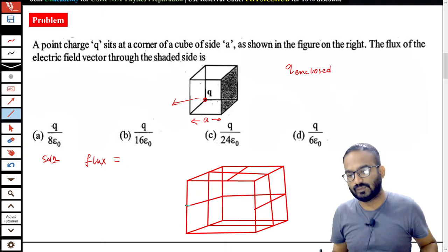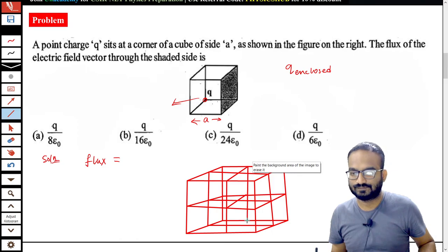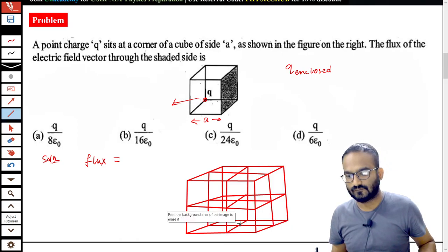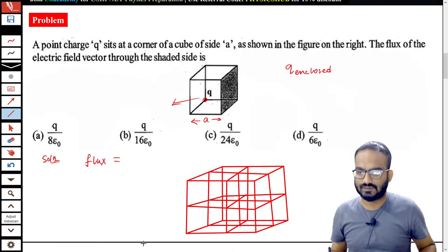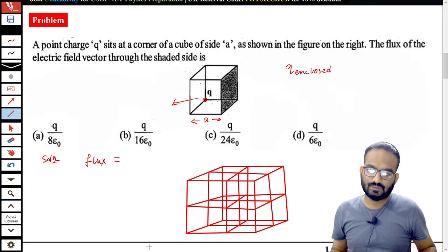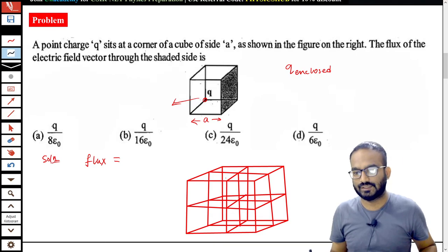To completely surround that cube, we need these things. I think it is almost done. Maybe, but you can understand. So here you see total how many cubes are there? Total 8 cubes are there: 1, 2, 3, 4, 5, 6, 7, 8.